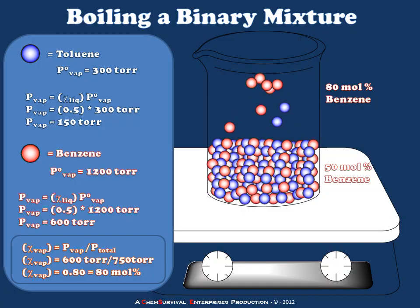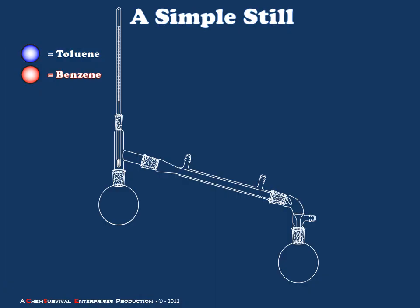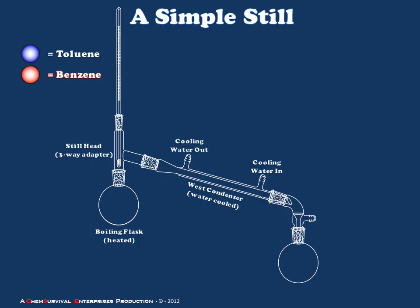Now we need an apparatus that will allow us to take advantage of the fact that this vapor is of a different composition. Depicted here is a simple distillation apparatus, or a simple still. Its components are as follows: a boiling flask placed on a heat source; a three-way condenser, or still head, whose purpose is to divert vapor from the headspace of the boiling flask into a cooler environment where it can be recondensed and collected; and a west condenser — a long narrow tube with a water jacket around the outside, with water plumbed in at the bottom and out the top, providing a cold surface on which vapor can recondense.